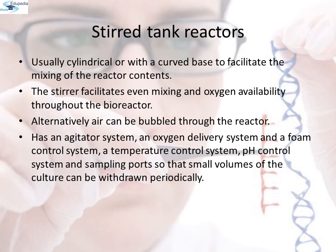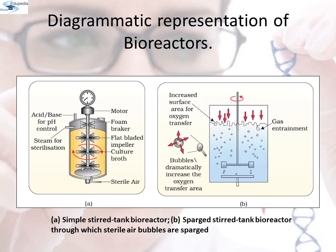Stirred tank reactors: a stirred tank reactor is usually cylindrical or with a curved base to facilitate mixing of the reactor contents. The stirrer facilitates even mixing and oxygen availability throughout the bioreactor. Alternatively, air can be bubbled through the reactor. The reactor has an agitator system, an oxygen delivery system, a foam control system, a temperature control system, a pH control system, and sampling ports so that small volumes of culture can be withdrawn periodically. The first type shown is a simple stirred tank bioreactor and the second is a sparged stirred tank bioreactor through which sterile air bubbles are sparged.